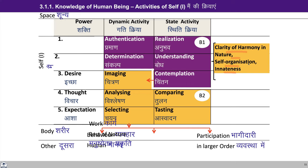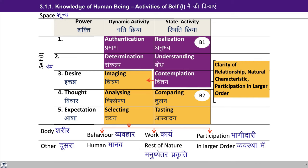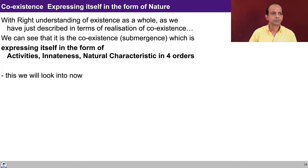We studied about the submergence of every order in space and saw that there is activity in each of the orders by virtue of being submerged. We also studied about the innateness of different orders and we can see that this innateness is something to be understood by the self. Going further, we can relate the natural characteristic — that is relationship, that is participation in the larger order — to contemplation. So we had studied about the self in module three. Now in module four, we studied about nature and saw how nature is an expression of coexistence. There are different orders in nature, and now we are able to relate the two: how the submergence, the innateness, and the natural characteristic relate to the activities of the self. With right understanding of existence as a whole — as described in terms of realization of coexistence — we can see that it is this coexistence, that is submergence, which is expressing itself in the form of activities, innateness, and natural characteristic in the four orders.